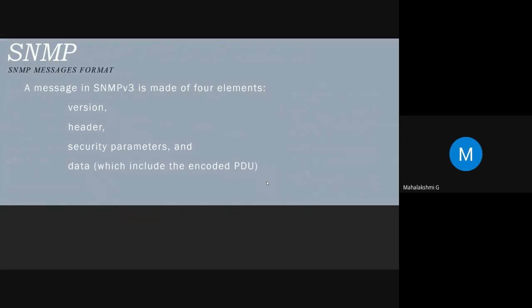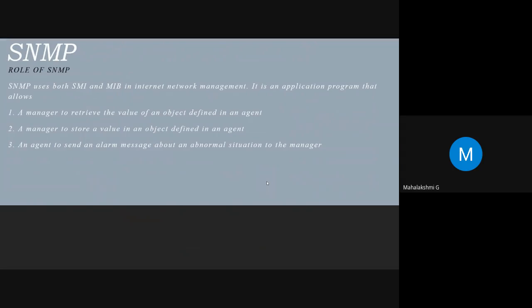SNMP does not send only a protocol data unit. It also embeds the PDU in a message. A message in Simple Network Management Protocol version 3 is made up of four elements: version, header, security parameters, and data, which includes the encoded PDU. SNMP uses both SMI and MIB in internet network management. It is an application program that allows a manager to retrieve the value of an object defined in an agent, a manager to store a value in an object defined in an agent, and agents to send alarm messages about an abnormal situation to the manager.